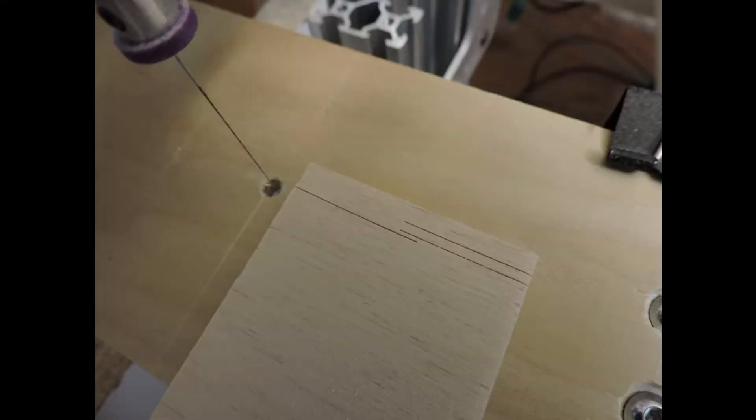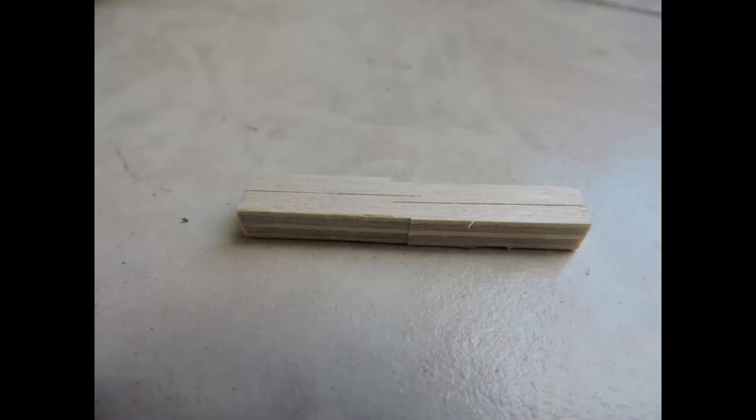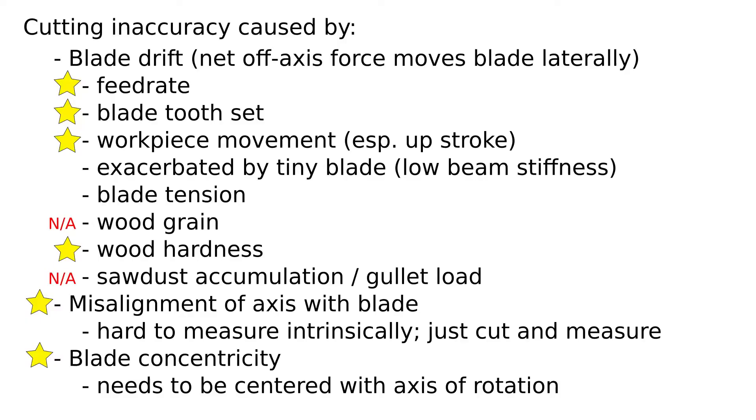And then it was a matter of doing some accuracy testing where these two lines should meet perfectly in the center, cutting from one side to the other, but they don't. And so here is a list of all the things that could and do contribute to the cutting accuracy of this saw.